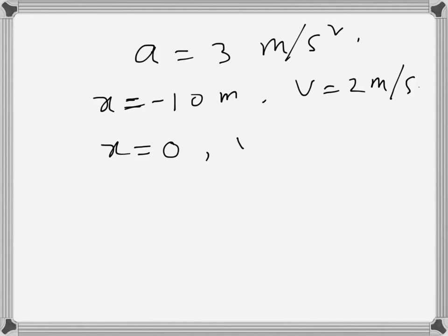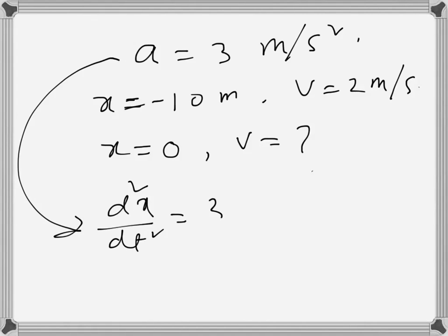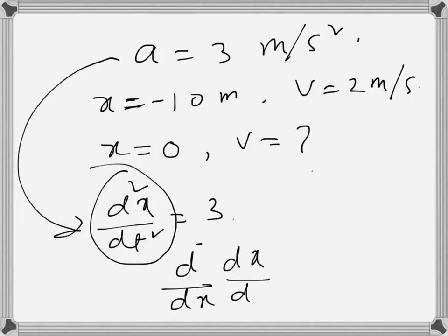Acceleration is d²x/dt² = 3. Now we need to manipulate this. This can be written as d/dx(dx/dt), which gives us dv/dt. Since dx/dt is v, this is dv/dt. Now we need to get rid of t because there is no information about t.